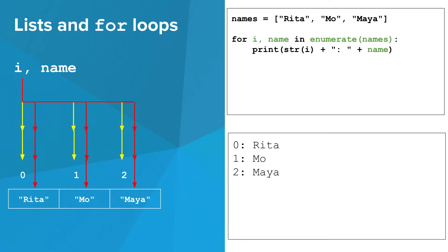This basically acts like two for loops at once. One which creates the variable i and assigns it each possible index from 0 to 2, and one which creates the variable name and assigns it each name in the list, Rita, then Mo, then Maya. When i is 0, name is Rita. When i is 1, name is Mo, and when i is 2, name is Maya.